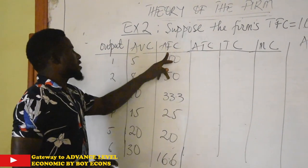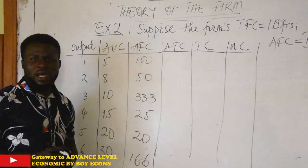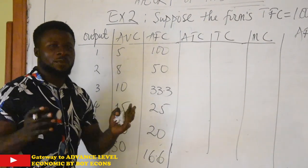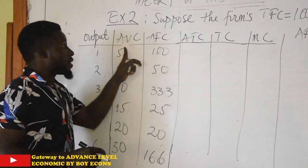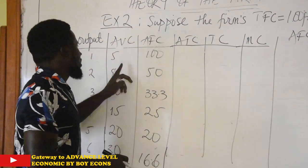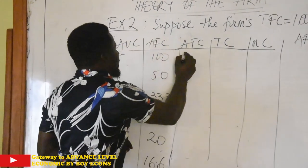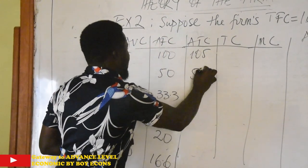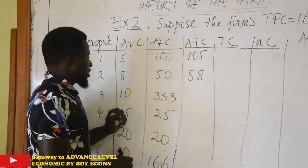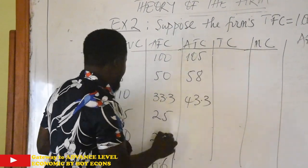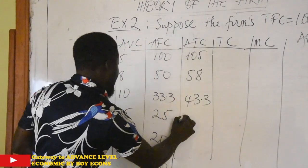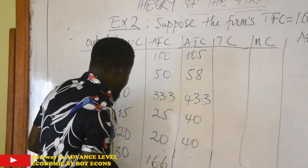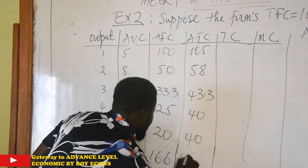We now have our average variable cost and average fixed cost, so it is very easy to get our average total cost. Remember that variable cost and fixed cost together give us total cost, so we just sum average variable cost plus average fixed cost to get average total cost. So: 5 + 100 = 105; 8 + 50 = 58; 10 + 33.3 = 43.3; 15 + 25 = 40; 20 + 20 = 40; and 30 + 16.6 = 46.6.